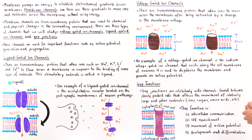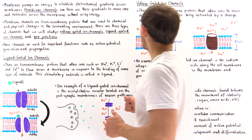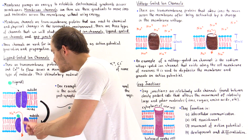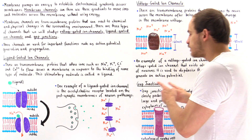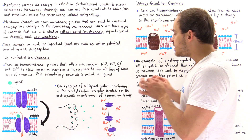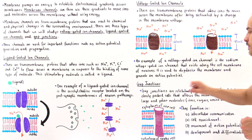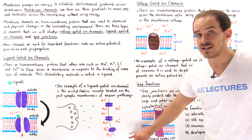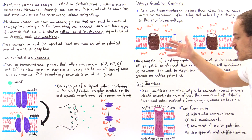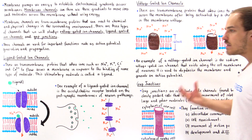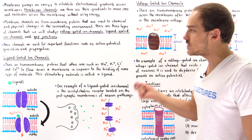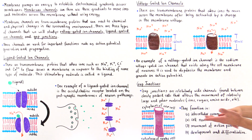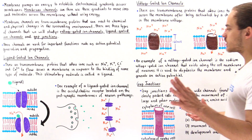Now let's focus on gap junctions. In the case of ligand-gated and voltage-gated ion channels, the spaces within the protein are relatively small. But gap junctions are relatively wide channels that exist between closely packed cells. A gap junction traverses two adjacent cell membranes and allows the movement of not only small ions, but also relatively large polar molecules such as sugar molecules like glucose, amino acids, and nucleotides.